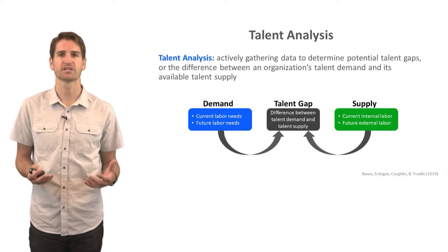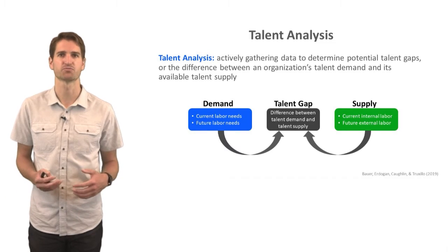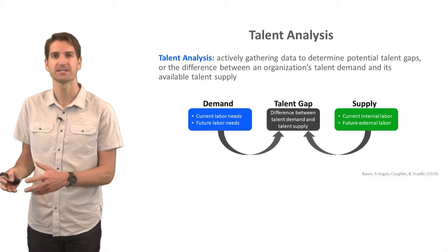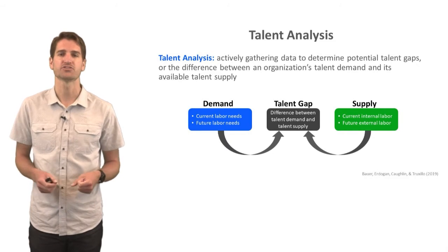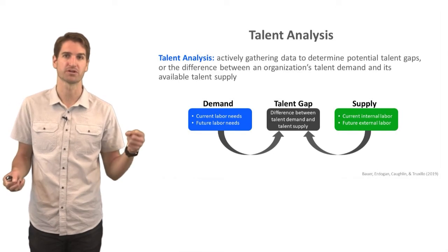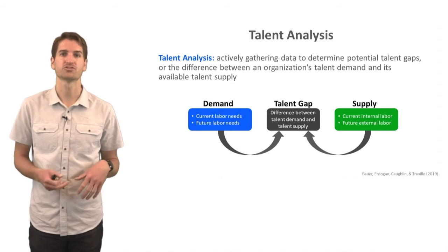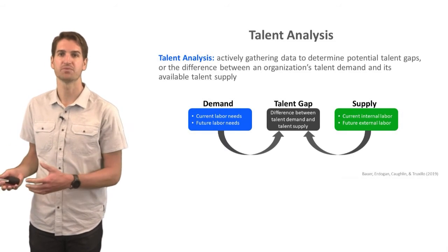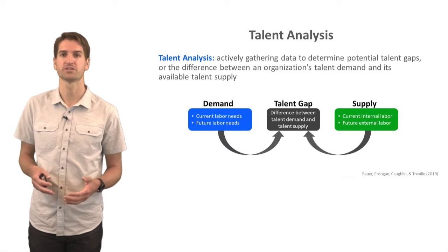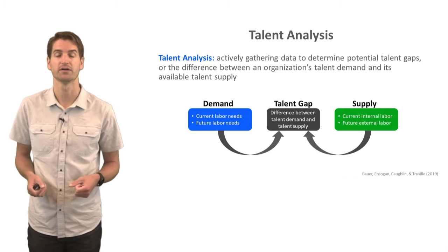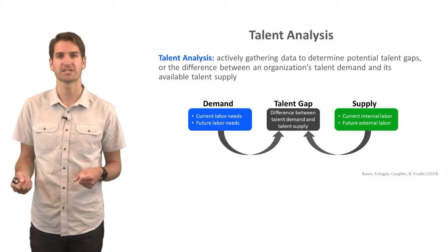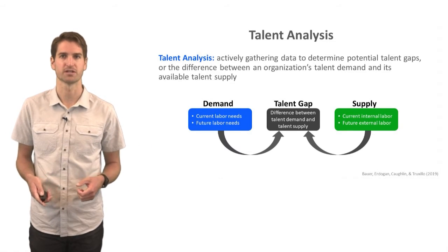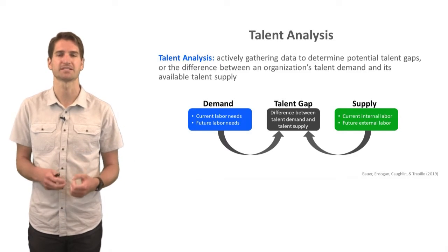To understand the talent flow, we often do what's called a talent analysis, which refers to actively gathering data to determine the potential talent gaps — the difference between an organization's talent demand and its available talent supply. That talent gap is really the distance between our talent demand and our talent supply. Talent demand refers to our current or future labor needs, while supply refers to our current internal labor as well as potentially the current or future external labor.